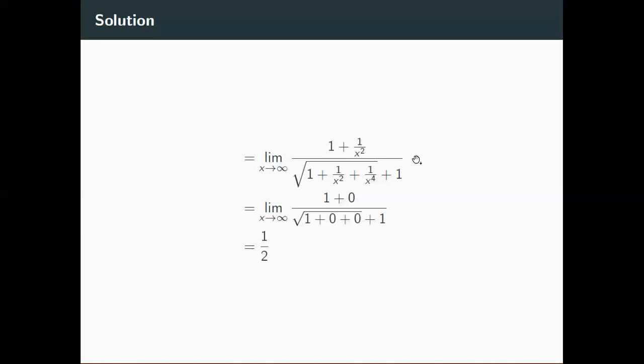So now I have this expression. And from here, it's very easy to see what the limit is. Because when x goes off to infinity, all of these terms with the x's in the denominators, they just go off to zero. So this is zero, this is zero, this is zero.